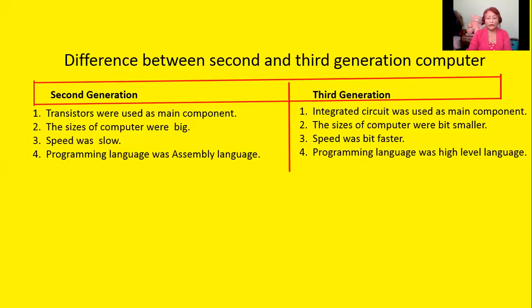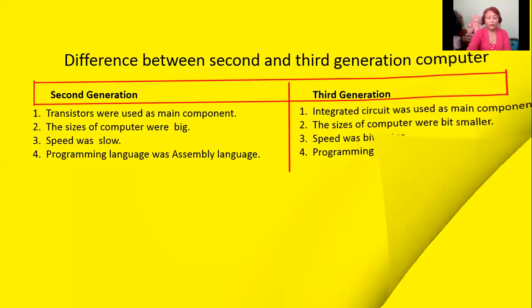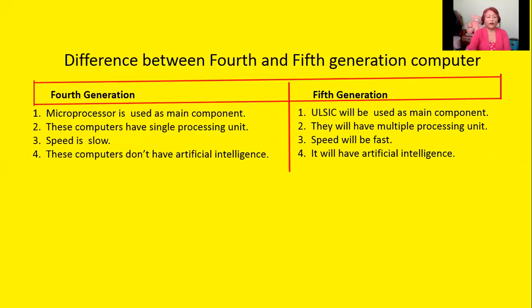Now let's look at the differences between fourth and fifth generation computers. The first difference: the main component was the microprocessor in fourth generation computers. And ULSIC, or biochip, will be used as the main component in fifth generation computers.